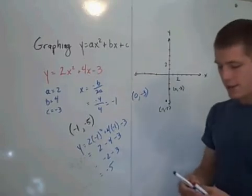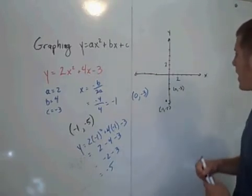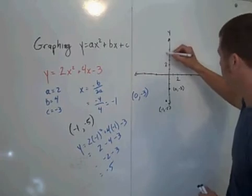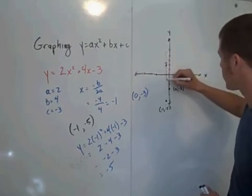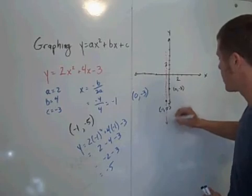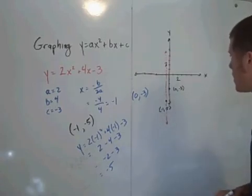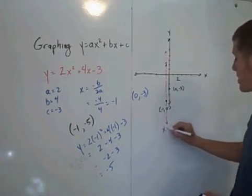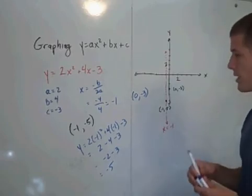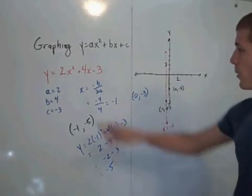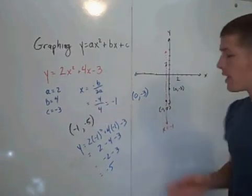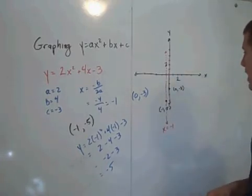And to get the third point, you have to recognize that we have this vertical line that goes through the vertex. And this is called the axis of symmetry. And in this case, it's the line x equals negative 1. It always has an equation of the form x equals negative b over 2a because it's the vertical line that goes through the vertex.